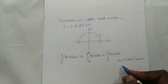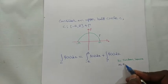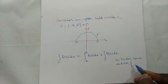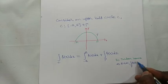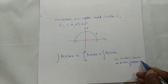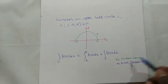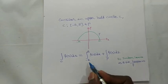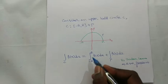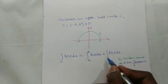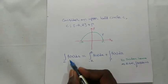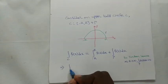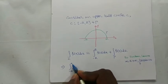By Jordan's Lemma, as R tends to infinity, the integral over gamma of f(z) dz equals 0. Substituting, as R tends to infinity the limits become minus infinity to plus infinity, and the gamma integral vanishes, leaving only the integral from minus infinity to plus infinity.